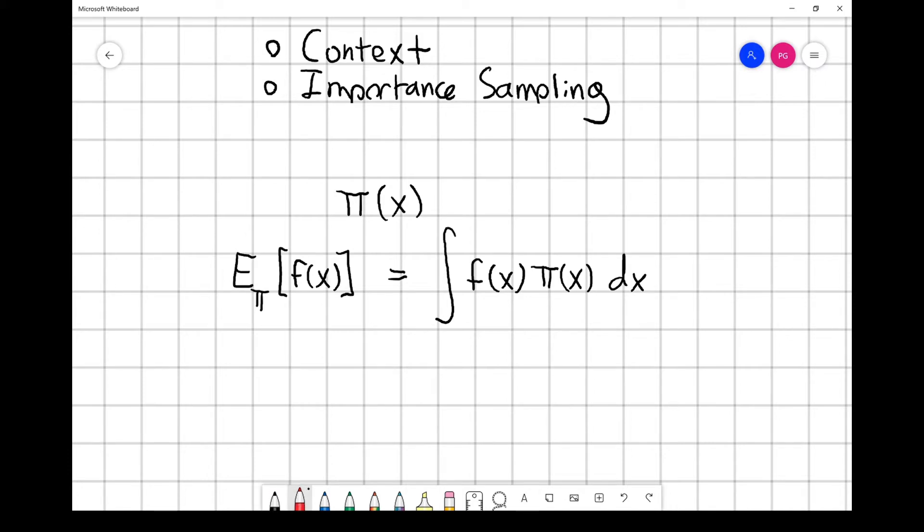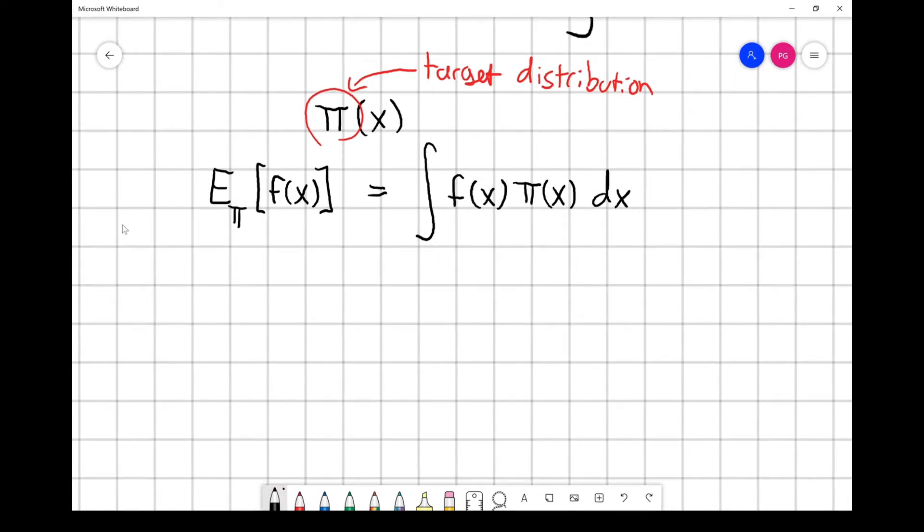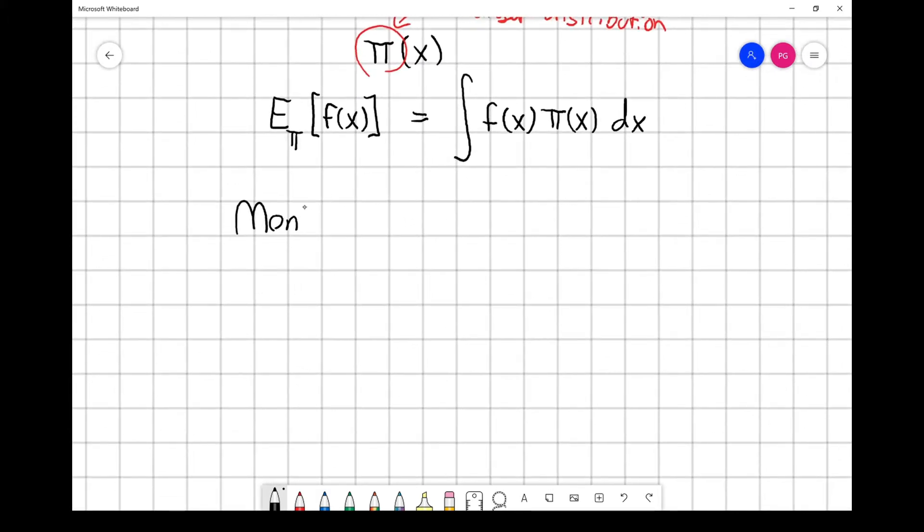We're going to refer to this as the target distribution. One thing we might do if this integral is difficult is get a Monte Carlo estimate. Let's say we have a way of generating samples from our target distribution. We'll generate N samples with superscripts: x¹ through xⁿ, generated from π(x).